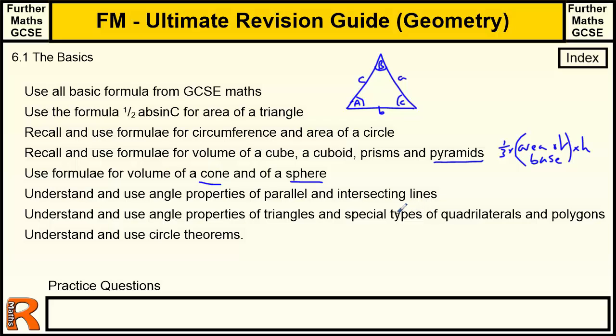Parallel lines, standard rules for those, the alternate angles, corresponding angles, and co-interior angles. Triangles, special types of quadrilaterals and polygons, so all the special quadrilaterals such as a kite, or a trapezium, or a rhombus, or a parallelogram, you should know the basics about those. And polygons, how to work out the interior angles of a polygon, or the exterior angles of a polygon, and so on, and the use of the standard circle theorems. Like I said, I'm going to put in some links to videos for pretty much all those topics there, so you can practice them if you get stuck.